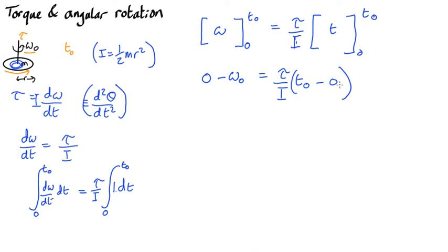Okay, so rearrange this and we find that t0 equals minus omega 0 I over tau. And we know that I is half m r squared, so that's minus omega 0 m r squared over 2 tau.